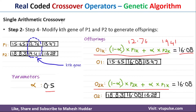To calculate o2 we use the same equation but swap p1k and p2k: alpha × p1k + (1 - alpha) × p2k. Solving this also gives 16.08, so o2 is equal to 16.08. This is the new offspring.